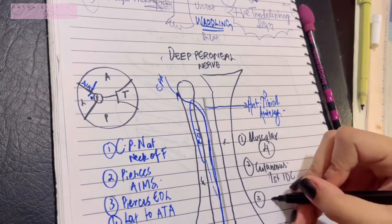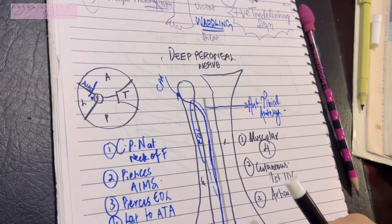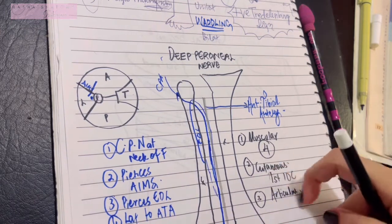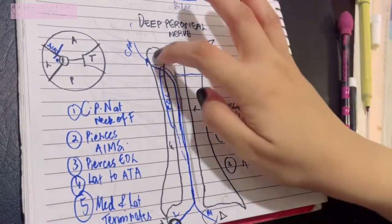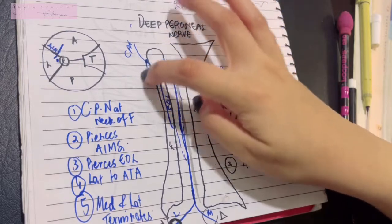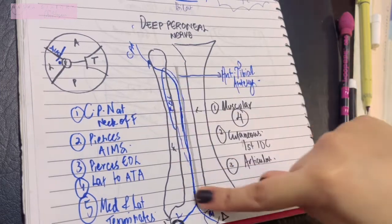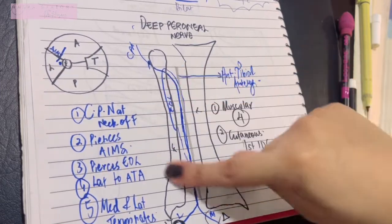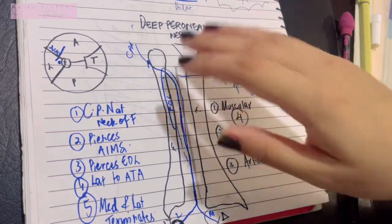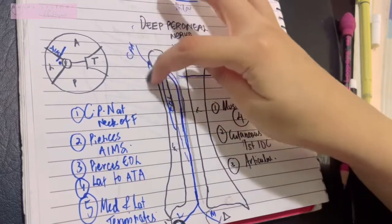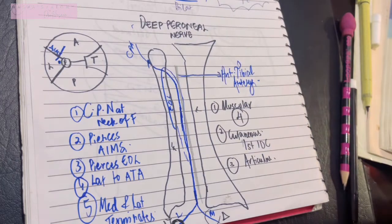It also gives articular branches supplying the ankle joint, the tarsal joints, and the joints of the first interdigital cleft. An important clinical point: if the deep peroneal nerve or common peroneal nerve is injured at the neck of fibula, the dorsiflexors of the anterior compartment will be paralyzed, resulting in loss of dorsiflexion — a condition known as foot drop.